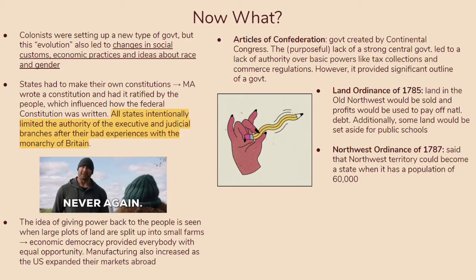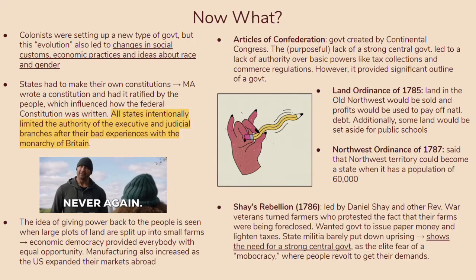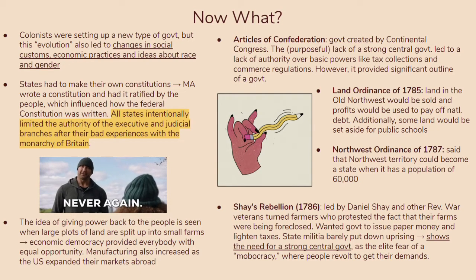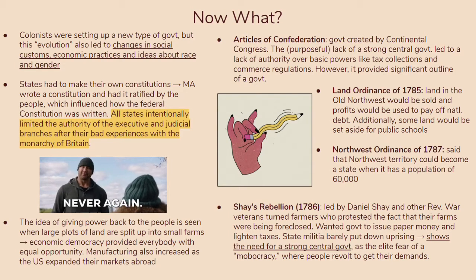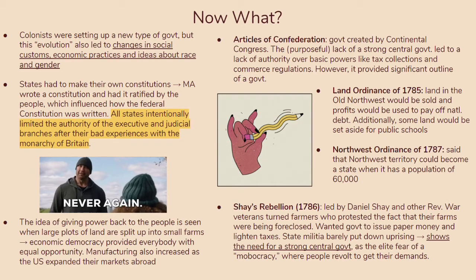One key weakness of the Articles of Confederation government is seen with Shays' Rebellion in 1786. This was led by Daniel Shays and other Revolutionary War veterans who had become farmers and protested the foreclosure of their farms. They wanted the government to issue paper money and lighten the taxes. To suppress this rebellion, the federal government couldn't really do anything, so state militia got involved and barely put down the uprising. This showed the need for a strong central government, as the elite feared a mobocracy — where people revolt to get their demands, just as had happened with the American Revolution when the people revolted against the British crown and got independence.